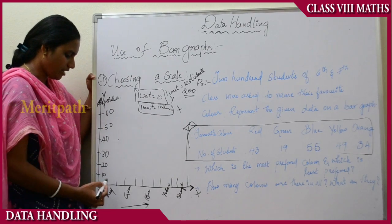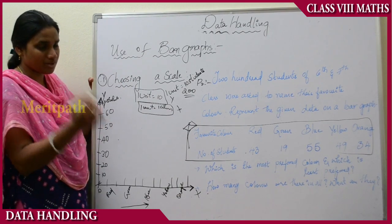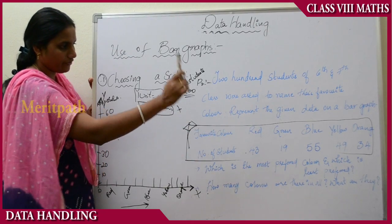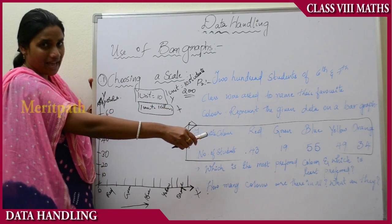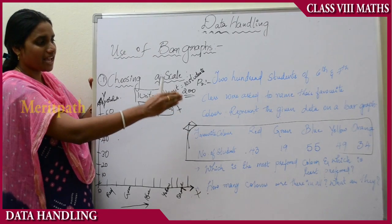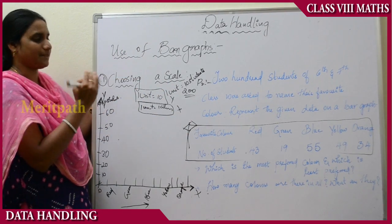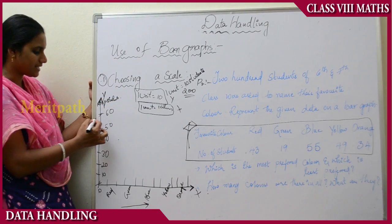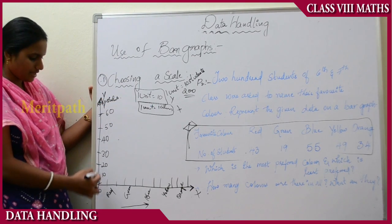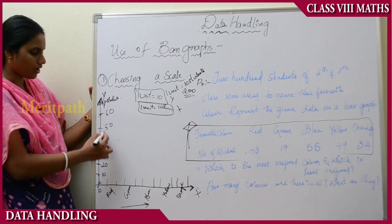First we have to determine the highest value among 43, 19, 55, 49, and 34. The highest number of students is 55. We need to take the scale greater than 55, so let it be 60. I have taken the scale with 10 units per centimeter: 0, 10, 20, 30, 40, 50, 60.